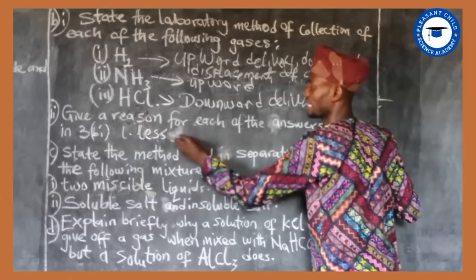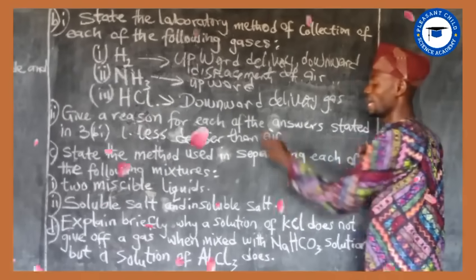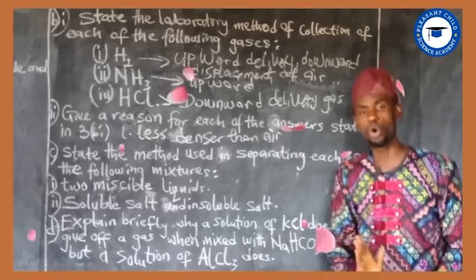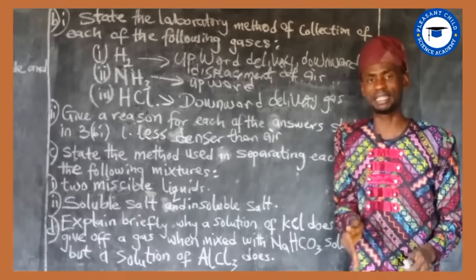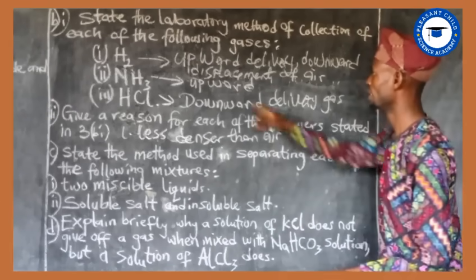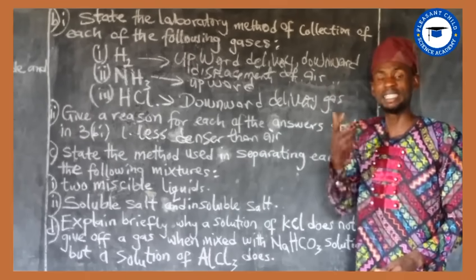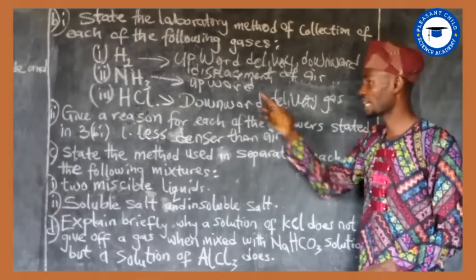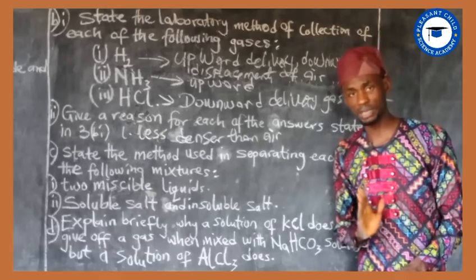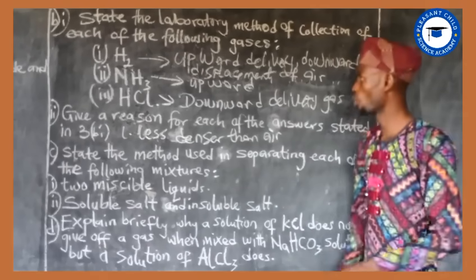Every gas that is less dense than air is collected by upward delivery of gas and downward displacement of air. The same reason applies to ammonia gas — ammonia gas is also less dense, or lighter, than air. Hydrogen gas is lighter than air, and ammonia gas is lighter than air. That is why they are both collected by upward delivery of gas and downward displacement of air.